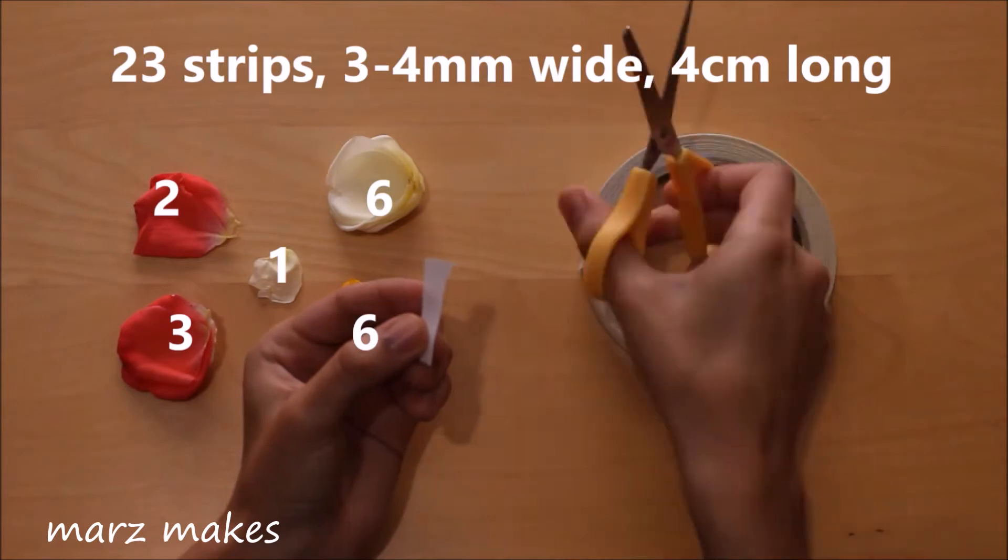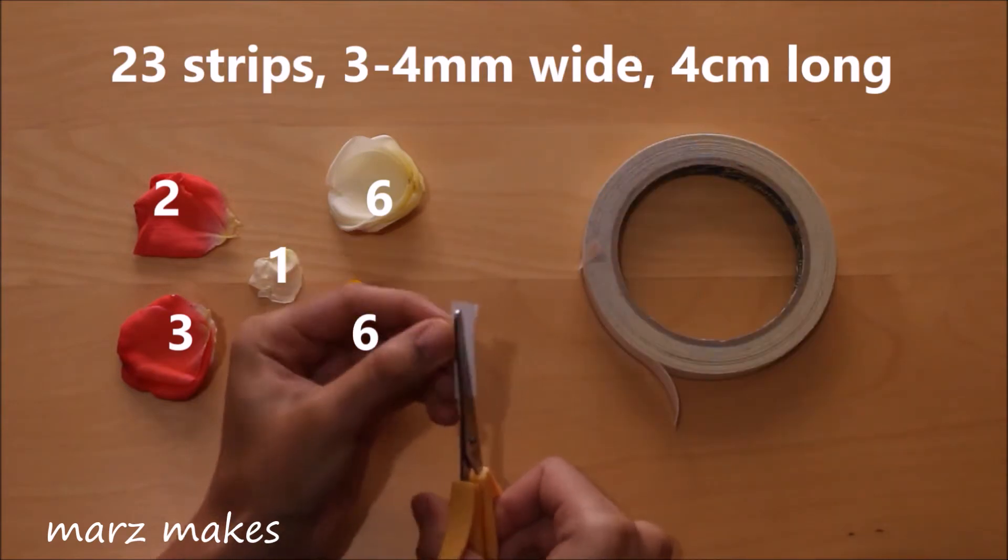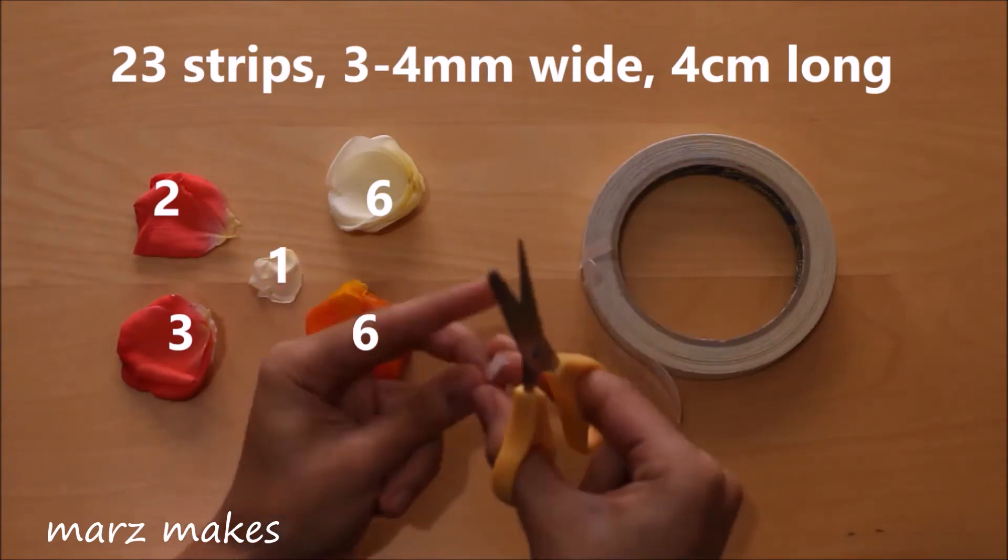These are the petals I'm using to create my bird. Here I'm cutting the double sided sticky tape into strips.